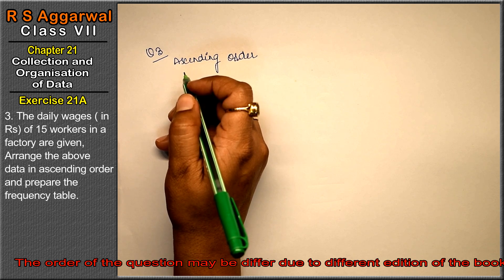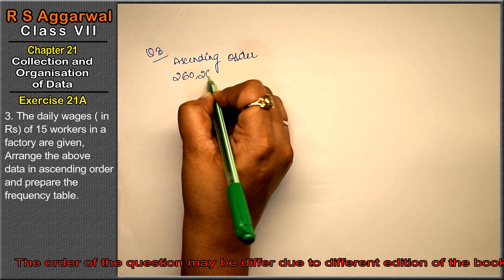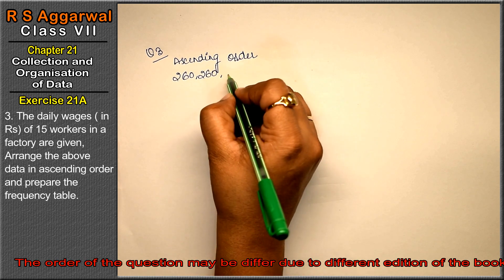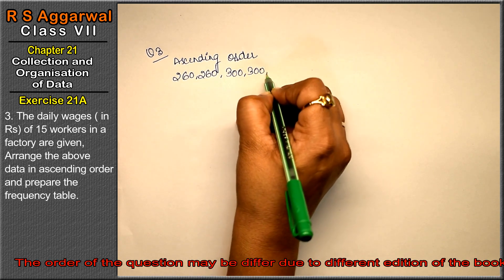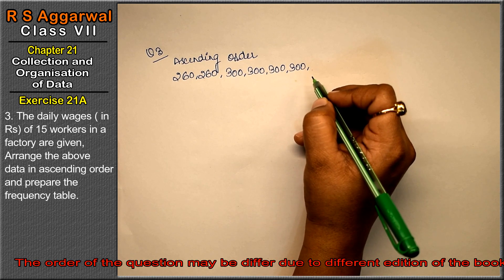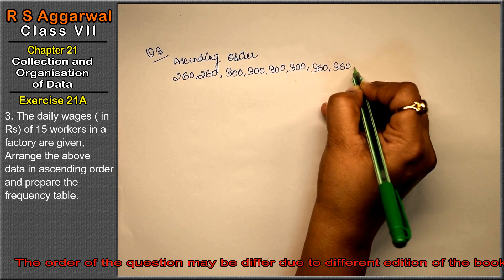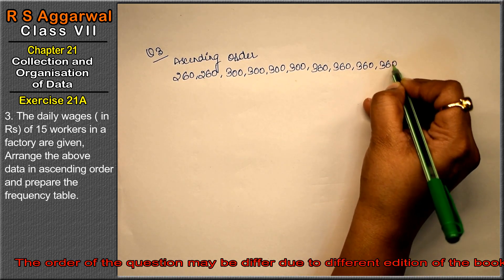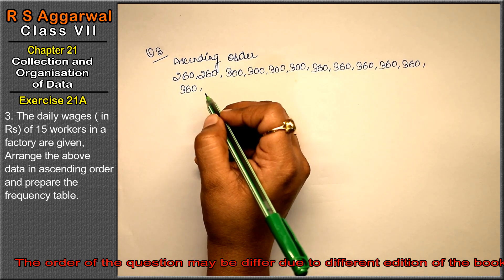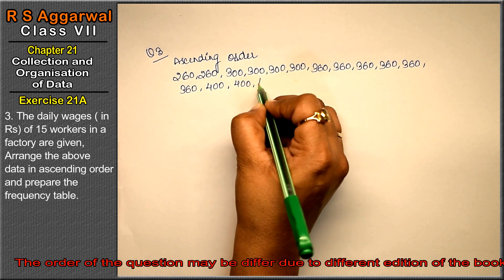The smallest value is 260, which appears 2 times. Then 300 appears 4 times. Then 360 appears 6 times. And 400 appears 3 times.